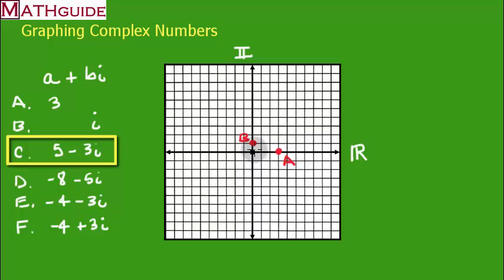And C, where is it? Five. So we go five to the right and then we're going to go three down. There you go, there's C.